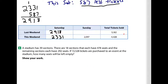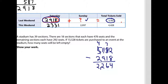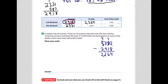Last thing: I have the total for last weekend, so Saturday plus Sunday should equal 5,182. Using the inverse, if I take 5,182 minus 2,918: twelve minus eight is four, seven minus one is six, eleven minus nine is two, four minus two is two. That means I can fill in the final spot on the table with 2,264 tickets last Sunday. Did you get all three of those numbers?